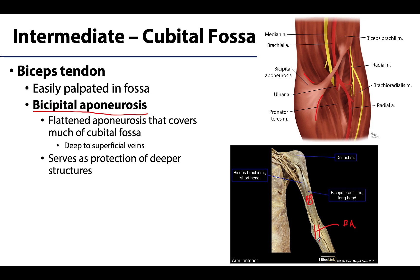This aponeurosis serves as an additional layer of protection for the deeper neurovascular structures of the cubital fossa. It also importantly serves as a barrier during venipuncture, preventing a needle from moving too deep and reaching the large brachial artery — it tends to slow or stop a needle once reached.